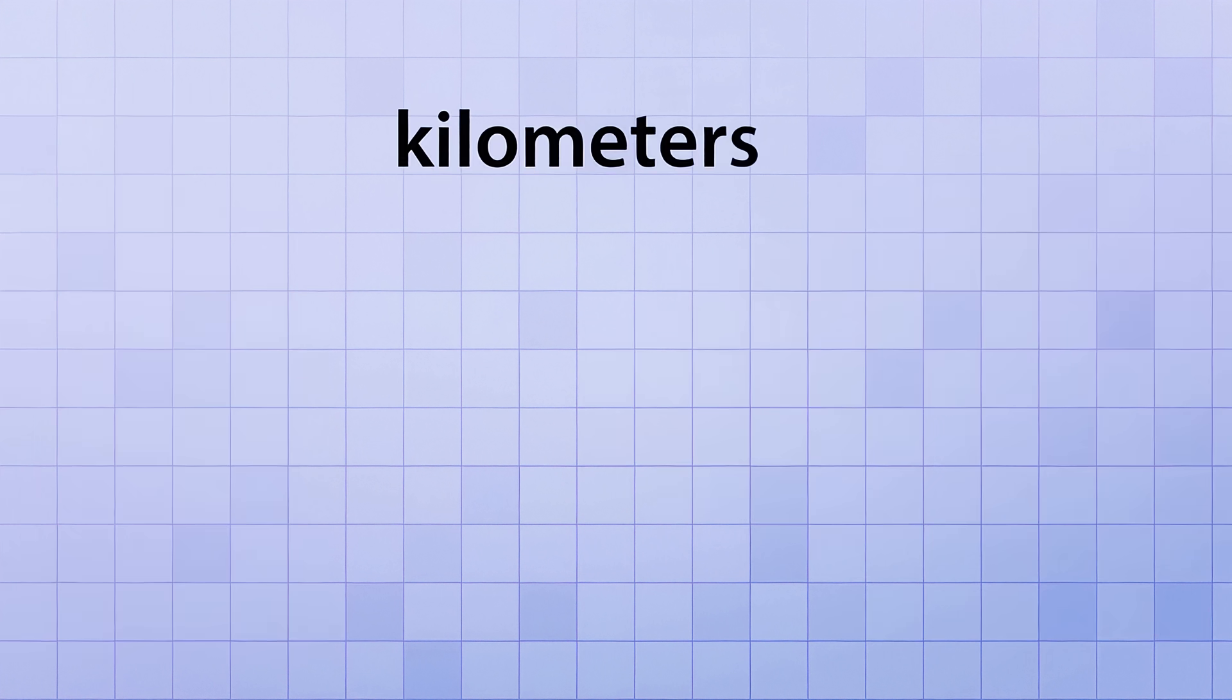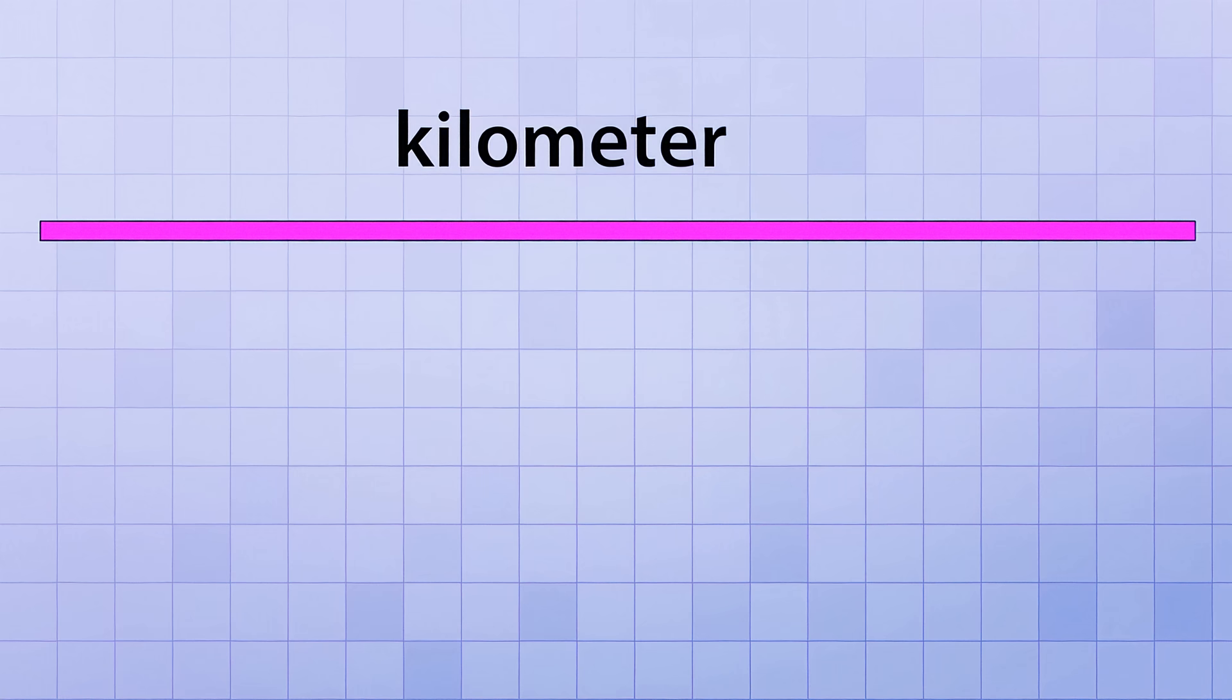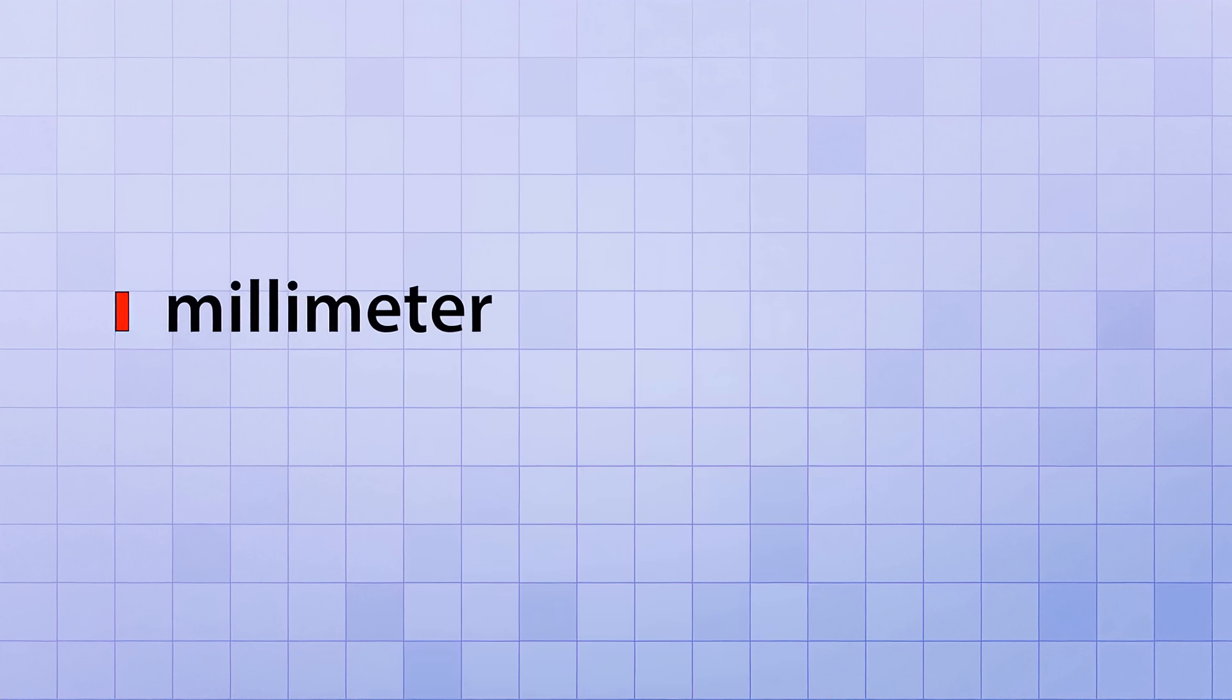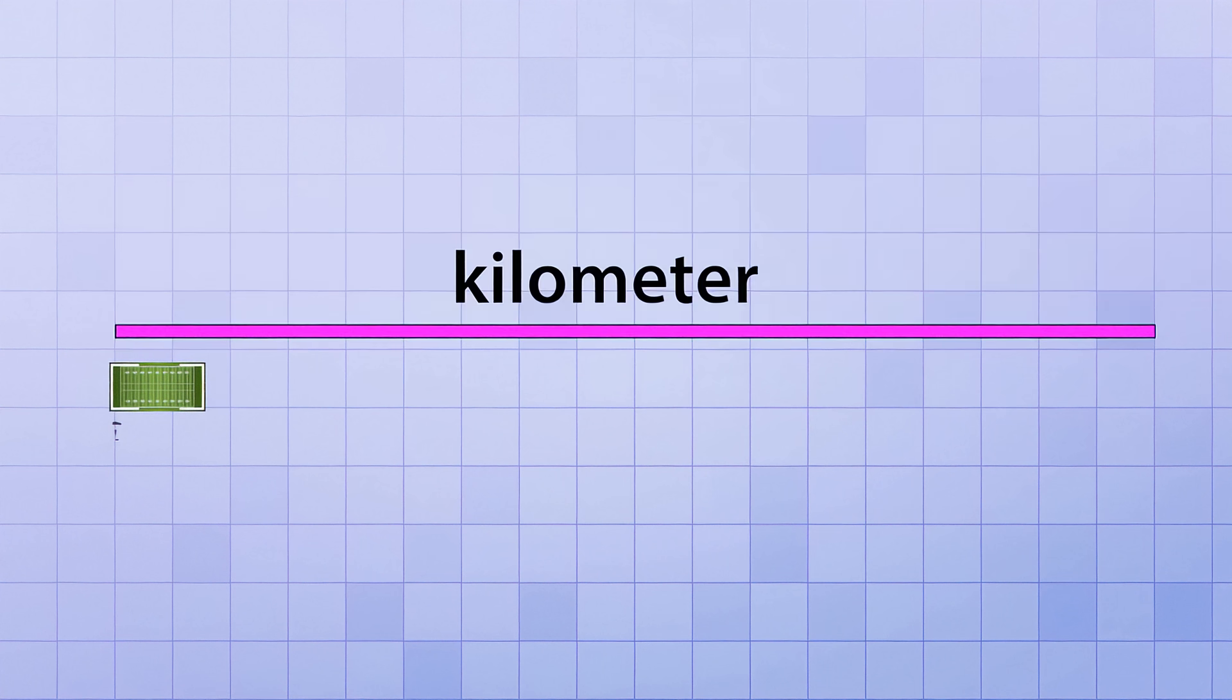But if you needed to measure even longer distances, you could use kilometers, or kilometers. A kilometer is the distance you'd get if you took exactly 1000 meters and placed them end to end. That's a long distance. It's much longer than the other metric units we've seen. If this is a millimeter, this is a centimeter, and this is a meter, then this is a kilometer.